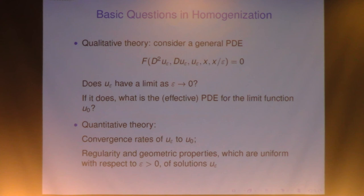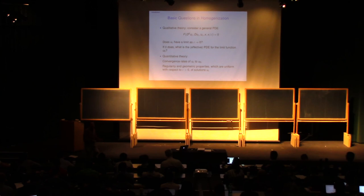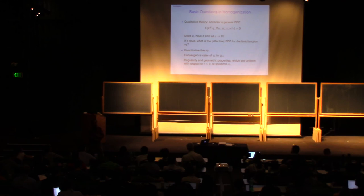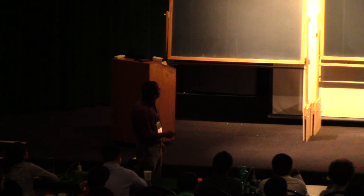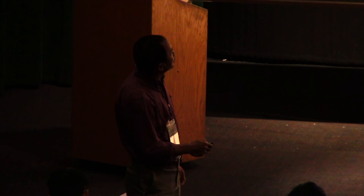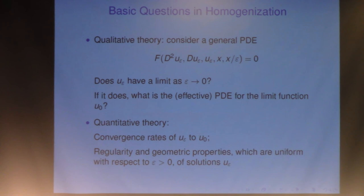I just simply described the problem for second-order elliptic equations, linear, the simplest one you can have. Actually, you can carry this process for any kind of PDEs: elliptic, parabolic, hyperbolic, linear, non-linear. So what's happening here: you look at the general PDE. It doesn't have to be second-order, it can be first-order or higher-order. You assume that this function, capital F, has some structure conditions with respect to this variable x, the last one here. And you change this variable to x/ε, and you ask the question: as ε goes to zero, does the solution have a limit? And if it does, what is the effective PDE for the limit function u₀?